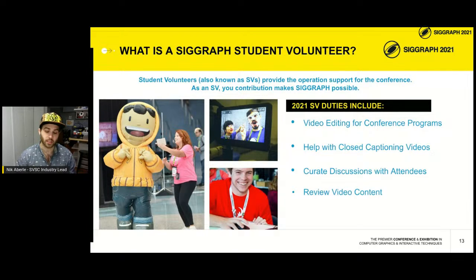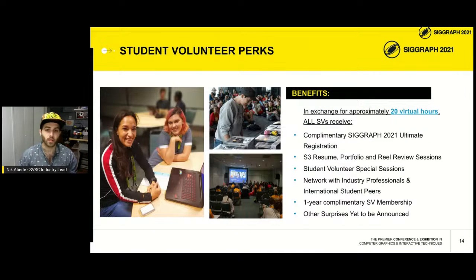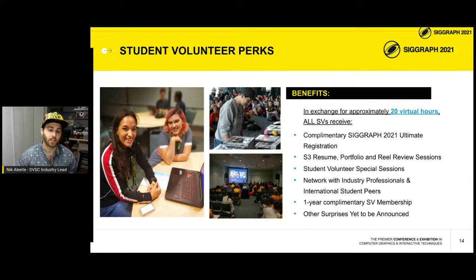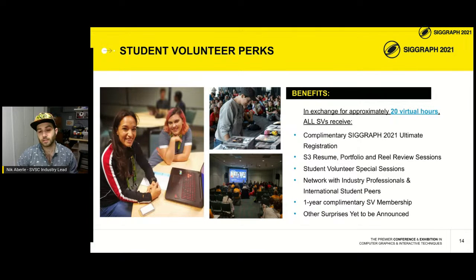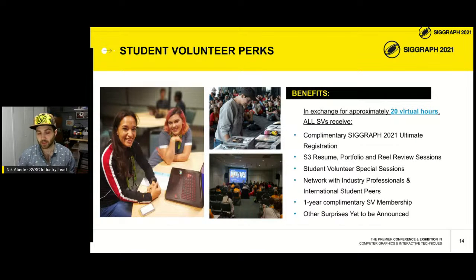A cool perk of reviewing video is you might end up watching a talk you wanted to see before the conference even starts, so you don't have to take time to attend it and can catch another session happening simultaneously. In exchange for approximately 20 virtual hours of work, all SVs receive complimentary SIGGRAPH 2021 ultimate registration — the highest tier that gets you into all conference content. Since it's virtual, all content will be available for two weeks after the show ends, so if you miss something, your registration lets you go back and watch it.